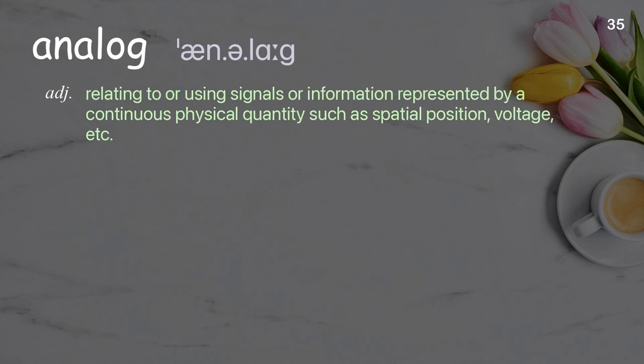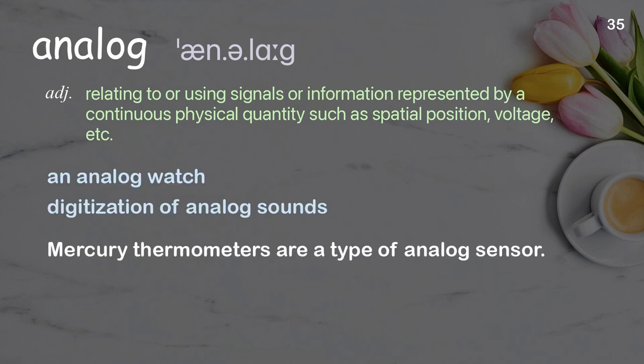Analog: Relating to or using signals or information represented by a continuous physical quantity such as spatial position, voltage, etc. Examples: an analog watch, digitization of analog sounds. Mercury thermometers are a type of analog sensor.